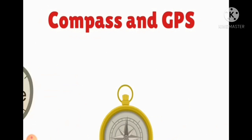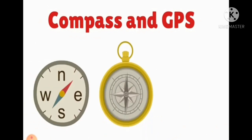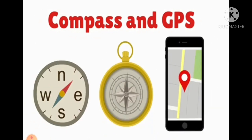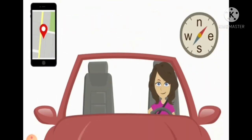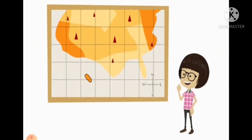Cardinal directions or cardinal points are the four main directions or points of the compass: North, East, South and West. These directions are also written in short form as N, E, S and W.